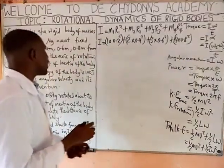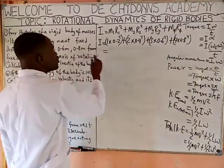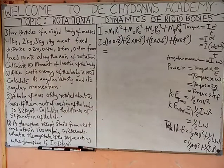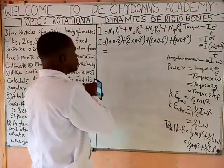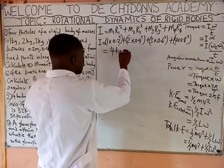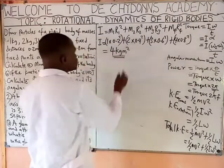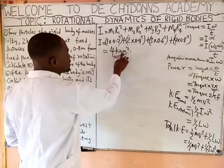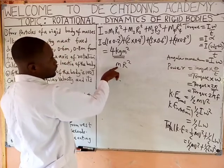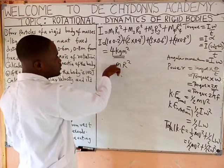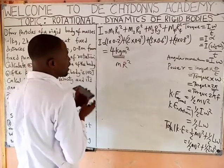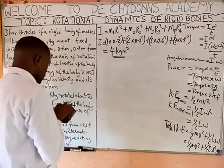The fourth mass goes with the fourth distance. When you use your calculator and press it, you will get 4 kilogram meter squared. The unit of moment of inertia is kg·m² from the formula MR² — M is mass in kilograms, R is radius in meters, squared.